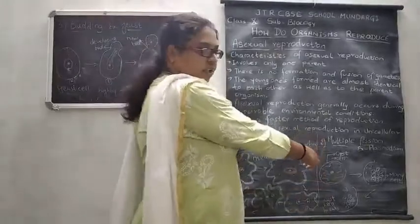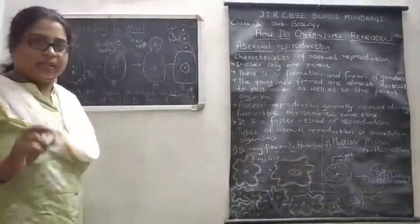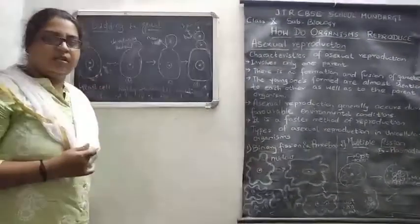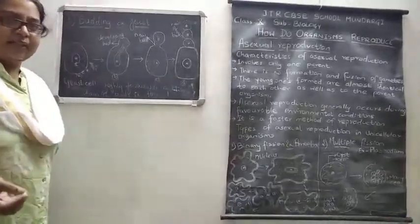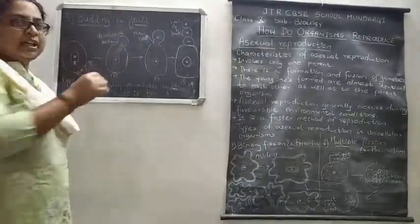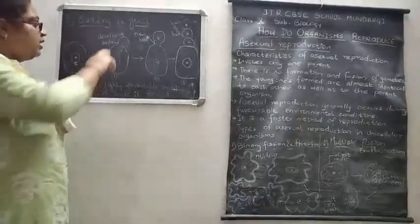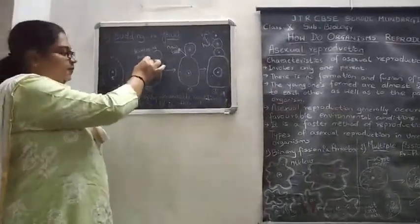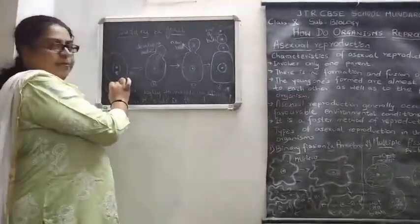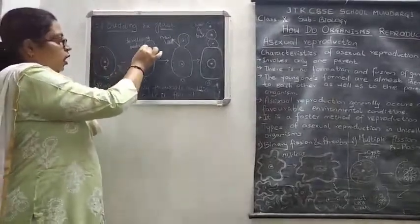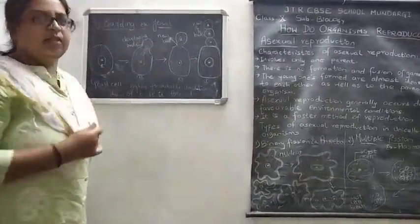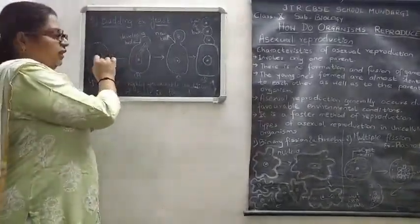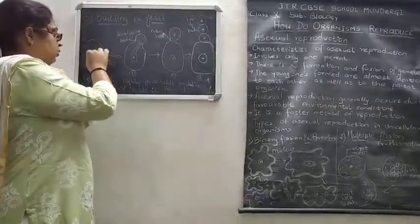The third type of asexual reproduction in single-celled organisms is budding. This takes place in yeast, which is a fungus. In budding, the yeast cell develops a small outgrowth over its surface. This outgrowth is called a bud.